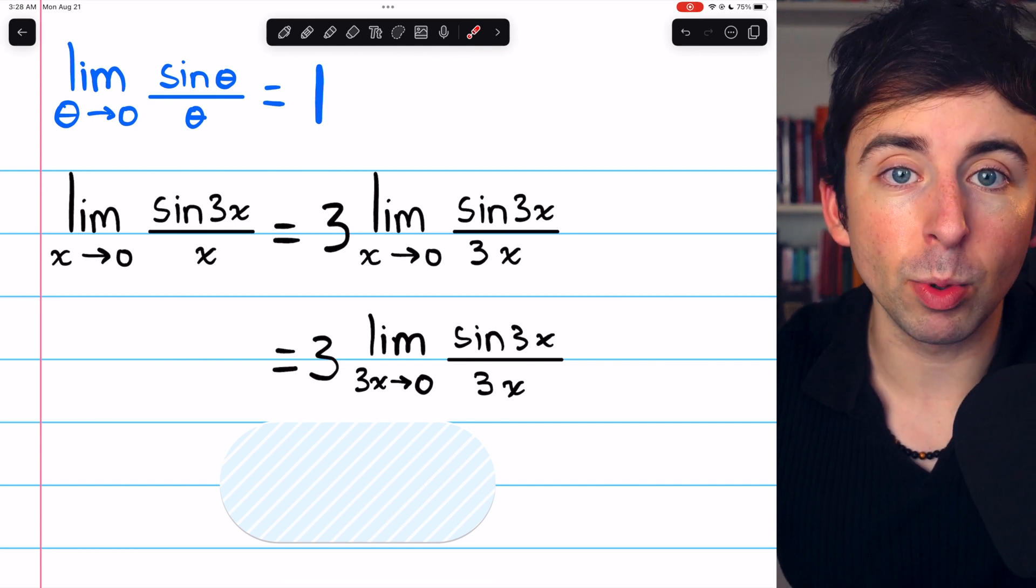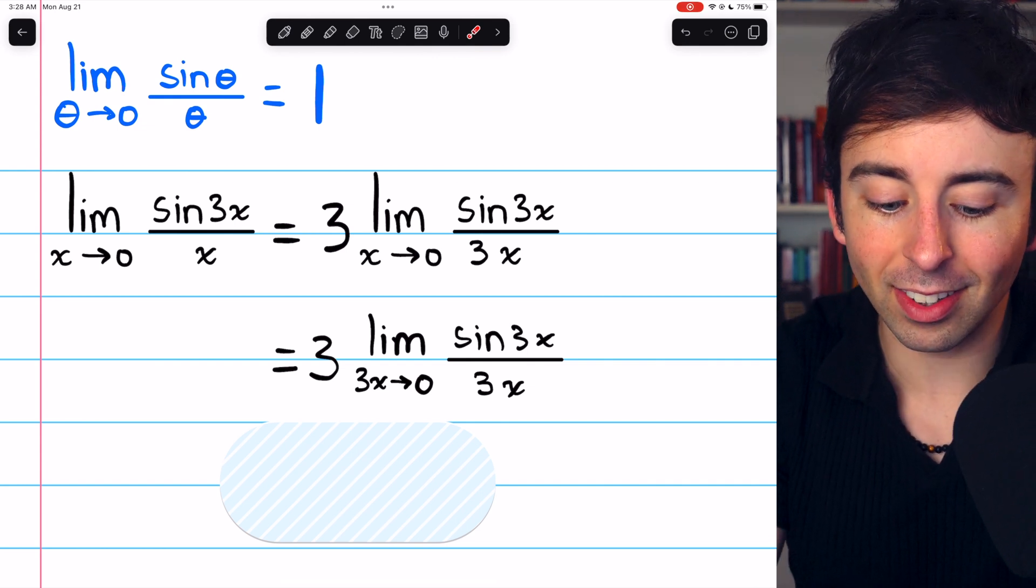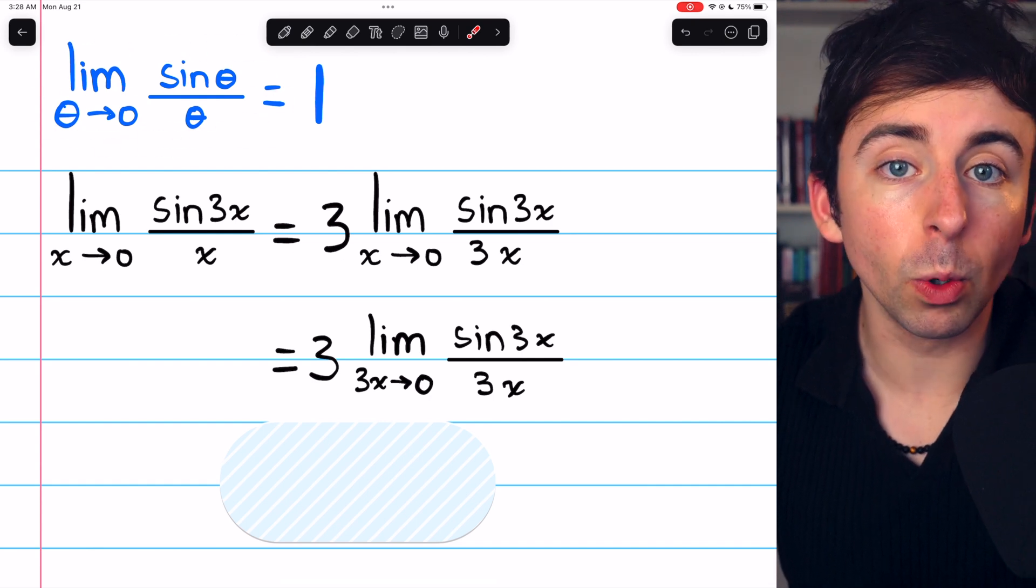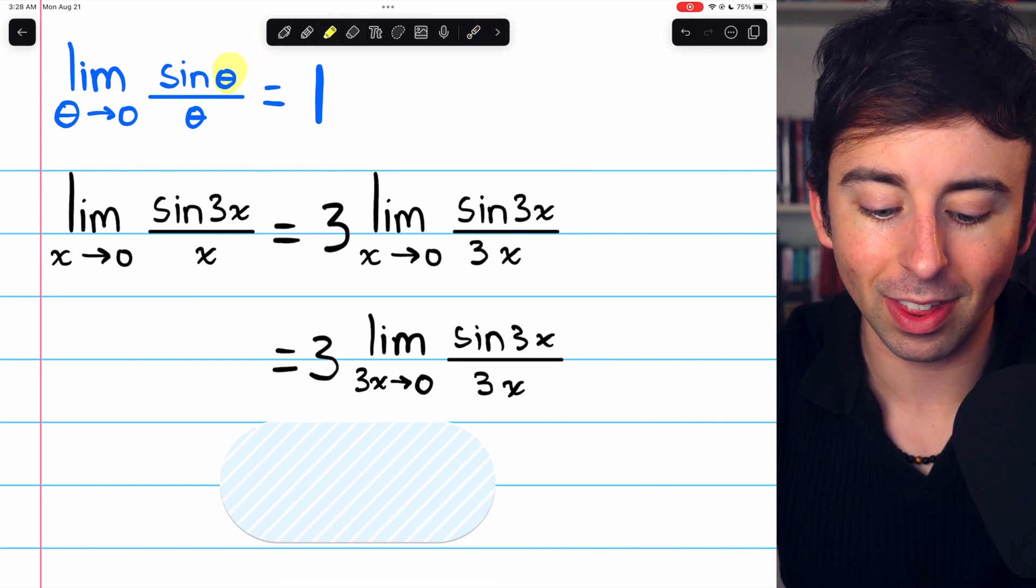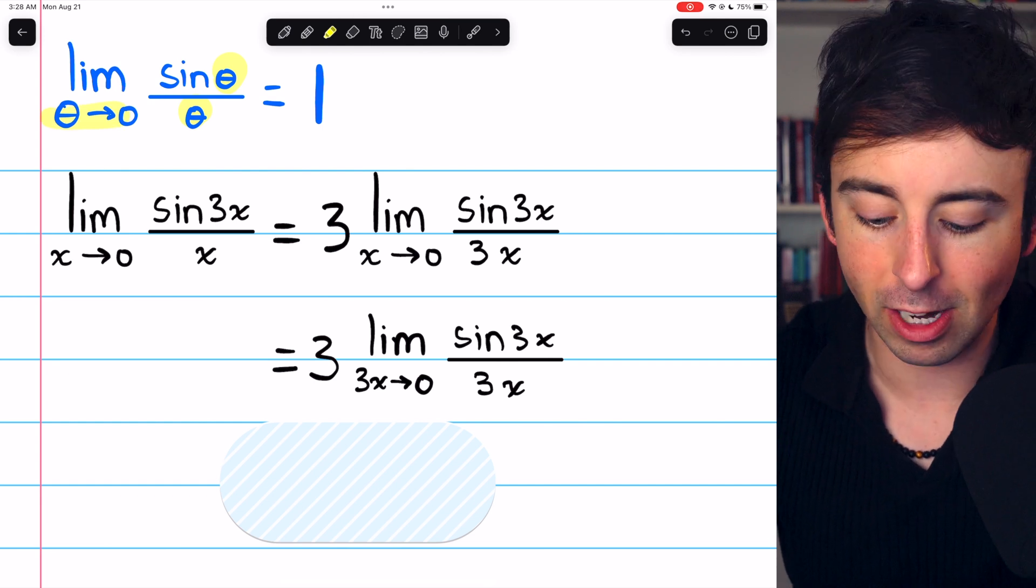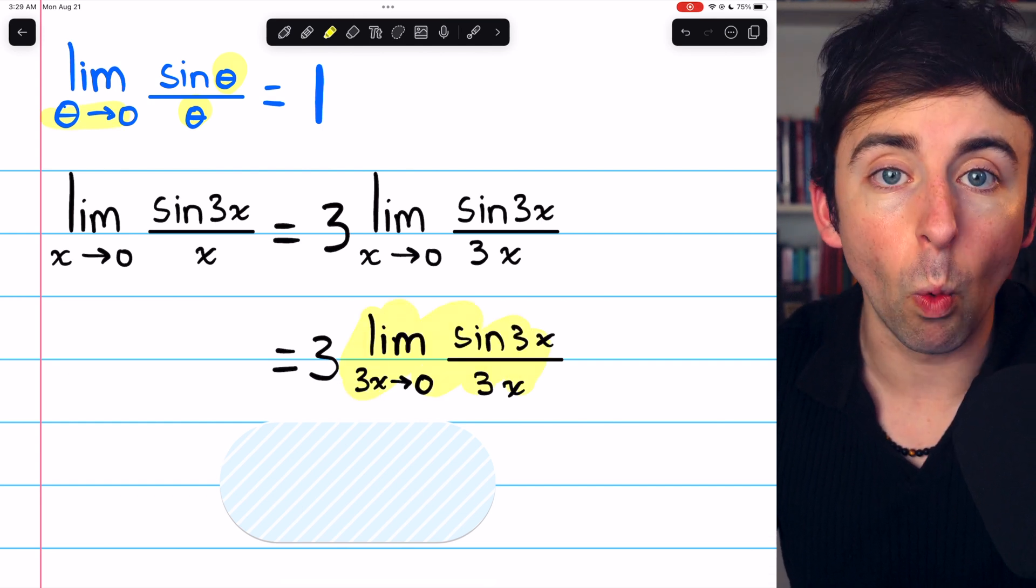That thing happens to be 3x, but this is precisely the limit that we know is equal to 1. It's sine of a thing over the thing as the thing approaches 0. So this part here must be 1.